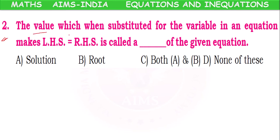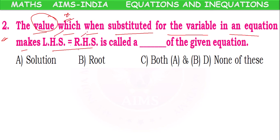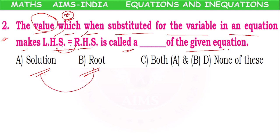Number two: the value which, when substituted for the variable in an equation, makes LHS equal to RHS — meaning the value which when substituted in place of variable X makes the LHS equal to RHS — that value is called the dash of the given equation. When we substitute the value, LHS becomes equal to RHS, meaning the value is satisfying the equation. It is called solution and root — both names apply. So option C, both A and D, is the correct answer.